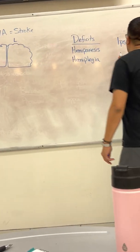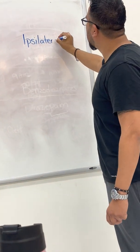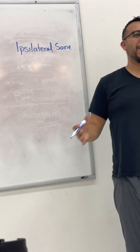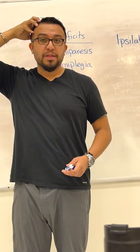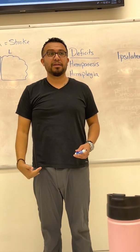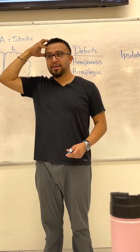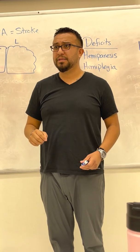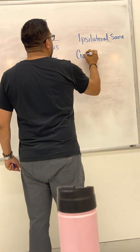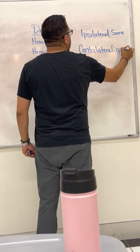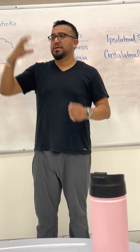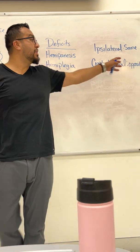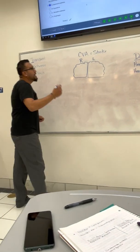You need to know the term ipsilateral, which means the same side. If you have a stroke on the right hemisphere, the part of your body that you can still use is the ipsilateral side — the same side as where the stroke occurred. You also need to know contralateral, which means the opposite side. So when somebody has a right hemisphere stroke, the affected side of the body is the contralateral side.